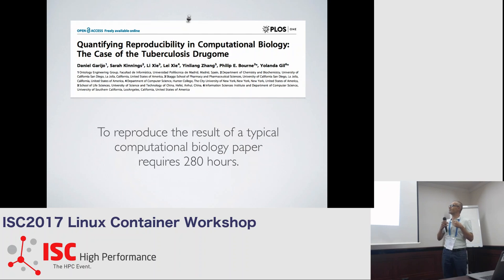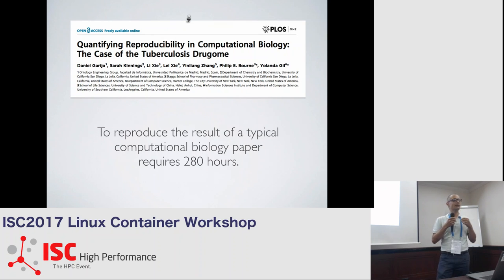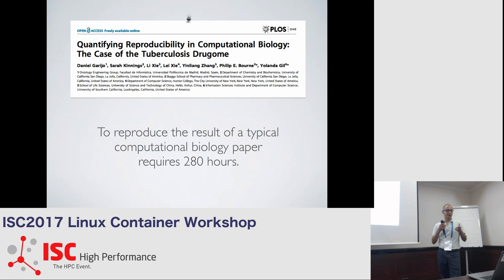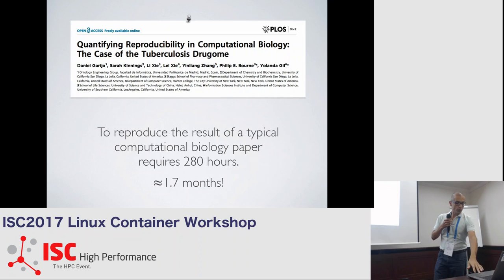To better measure that complexity, there is a paper where researchers tried to quantify the effort necessary to replicate the results of a typical computational biology paper. They found that the average time is 280 hours — nearly two months — just to replicate an experiment, not to implement a new one. That is a lot of wasted time.